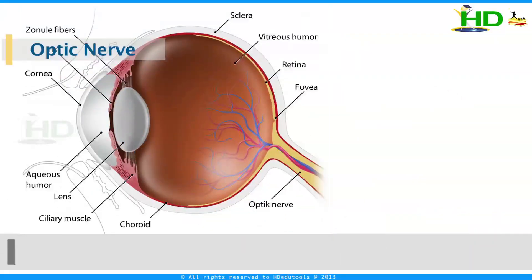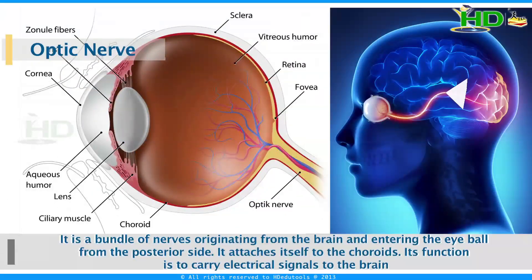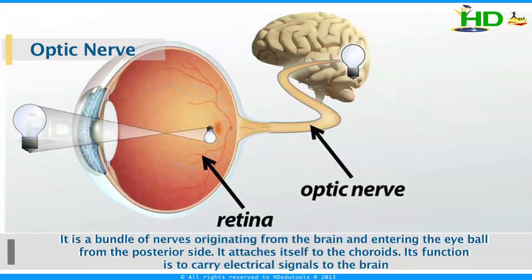The optic nerve is a bundle of nerves originating from the brain and entering the eyeball from the posterior side. It attaches itself to the choroid. Its function is to carry electrical signals to the brain. This optic nerve is very important in the eye — it carries the visual sensation from the eye to the brain.